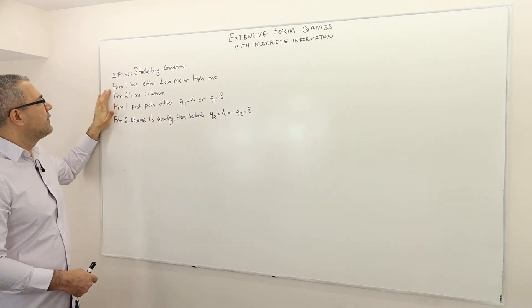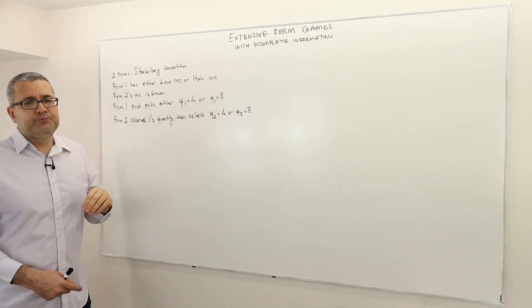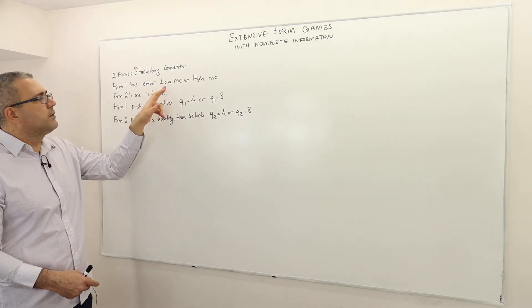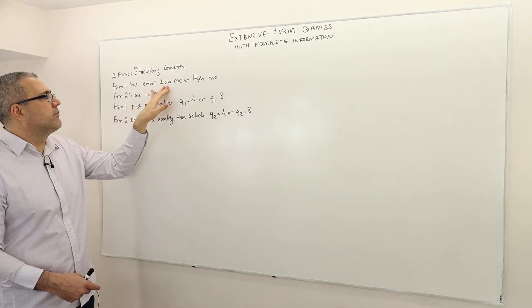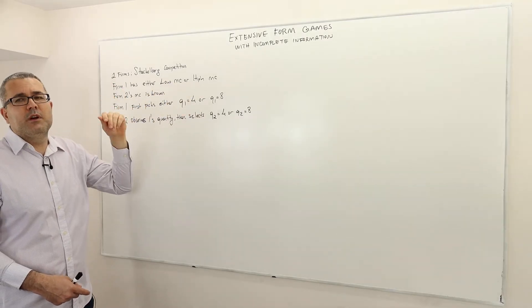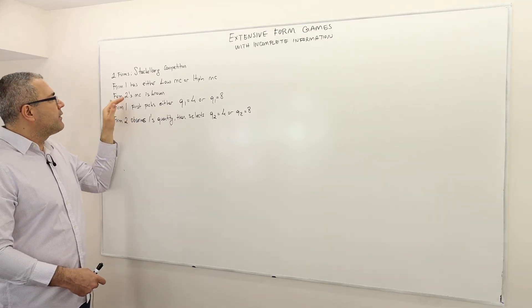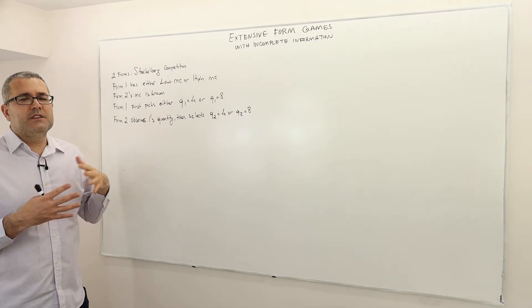Well I suppose that firm 1's marginal cost is unknown to firm 2. So firm 2 believes that firm 1's marginal cost is either low, for example marginal cost equals zero, or high, for example marginal cost equals 10.